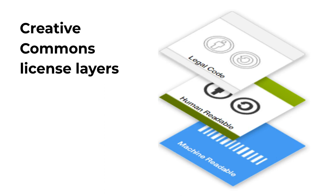The final layer is machine-readable. This means that applications, search engines, and other technologies can understand how a work is licensed. This helps you use internet search tools to identify CC-licensed content that you can reuse, for example.